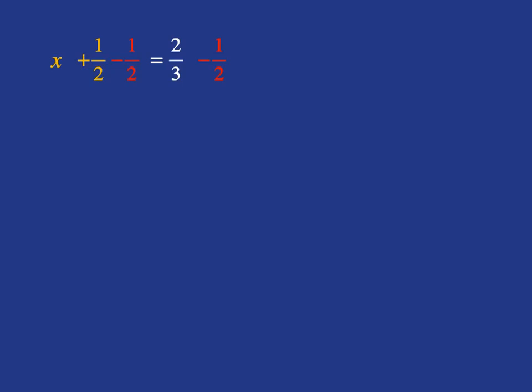So the left works out really nicely. x plus a half minus a half obviously just gets us to x, which is what we wanted. Now we've got to work out what 2 thirds subtract a half is. If you've got a calculator, you can just go ahead and use the calculator. But let's just do a quick reminder of how we do subtraction with fractions. First thing we need to do is we have to have a common denominator. We can't subtract the thirds and the halves. We've got to have them with the same denominator.